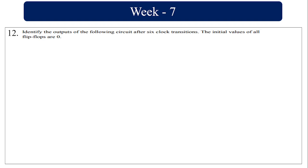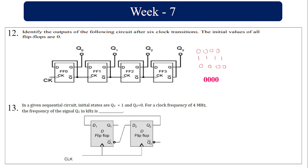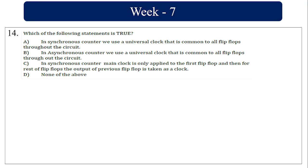Identify the output of the following circuit after the sixth transition. Initially the flip-flop is 0 0 0 0. Q-bar is given as input to the next stage. After cycling through, it becomes 1 1 1, then 0 0 0, and at the end of the sixth clock pulse it becomes 0 0 0 0. The sequential circuit clock is 250 kHz.